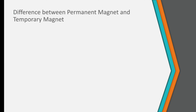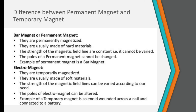Now, what is the difference between a permanent magnet and a temporary magnet? A permanent magnet — like a bar magnet — is permanently magnetized, usually made of hard materials. The strength of its magnetic field is constant, it cannot be varied, and its poles cannot be changed. In a temporary magnet, the magnetic property is present only temporarily; it is usually made of soft materials. The strength of its magnetic field can be varied, and its poles can be altered. An example of a temporary magnet is a solenoid wound around a nail and connected to a battery.